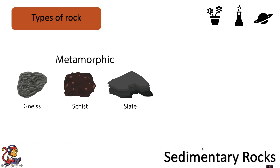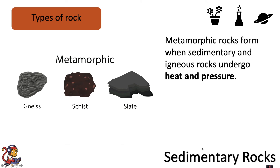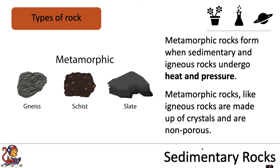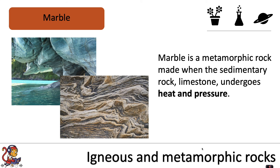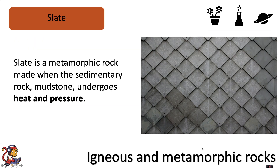Now let's look at metamorphic rocks. Examples include gneiss, schist, and slate. Metamorphic rocks form when sedimentary and igneous rocks undergo heat and pressure — those are the two conditions needed. Like igneous rocks, metamorphic rocks are made up of crystals and are non-porous. Marble is a metamorphic rock made when the sedimentary rock limestone undergoes heat and pressure. Slate is a metamorphic rock made when the sedimentary rock mudstone undergoes heat and pressure.